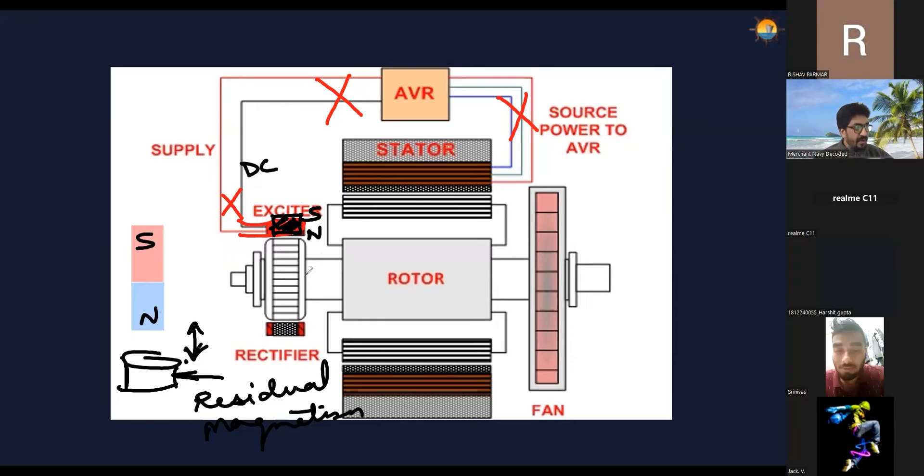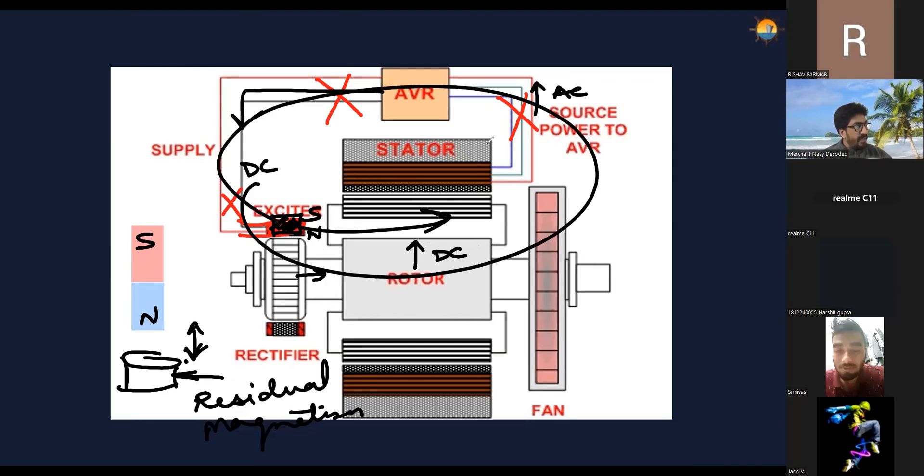this will still be able to produce some AC current in the exciter rotor, and that can produce some DC after rectification. Some DC will be there that will produce some AC out of this. I'm not saying 440, but something. And that something is enough to build and grow in a cycle. So this cycle will keep repeating till the time you achieve 440 volts in the output. So it keeps on growing. It's because of residual magnetism. Simple answer.